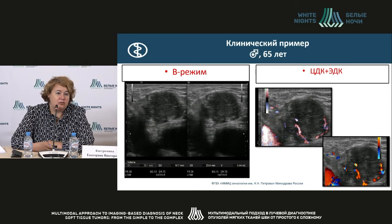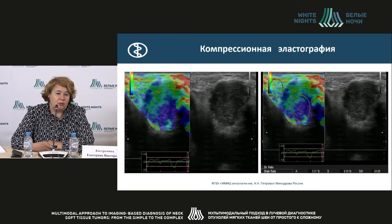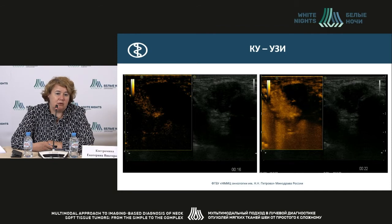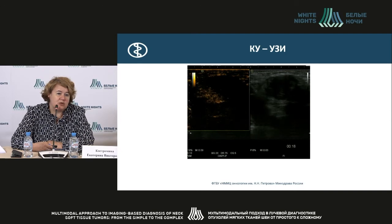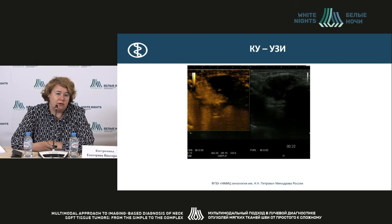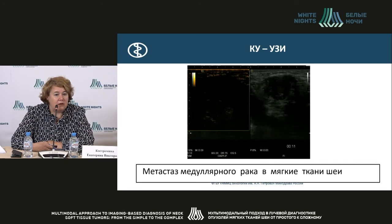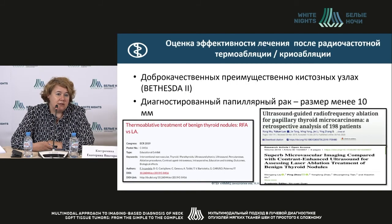The last example uses both contrast and elastography. After surgery, a female aged 60 with nodular cancer — five years later complaining of modifications on the neck surface in soft and rear tissues. A node was found with symmetric peripheral blood flow and uneven borders. High signs of third and fourth elastotype, rigidity coefficient of 25. When contrast was added, heterogeneous filling in both arterial and venous phase was seen. The contrast arrived differently in different areas — this was metastasis of cancer into the soft tissues of the neck.